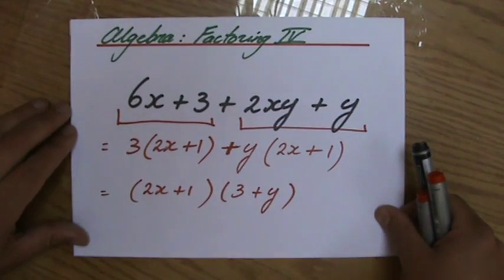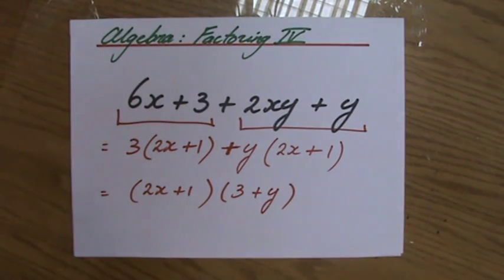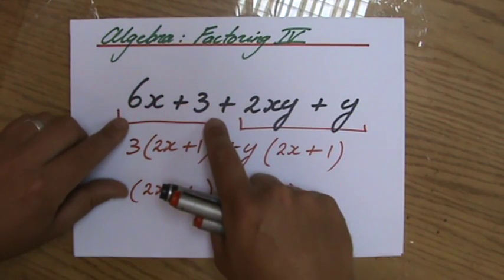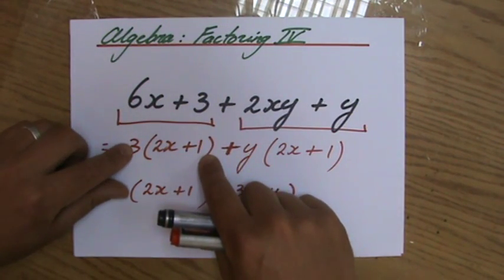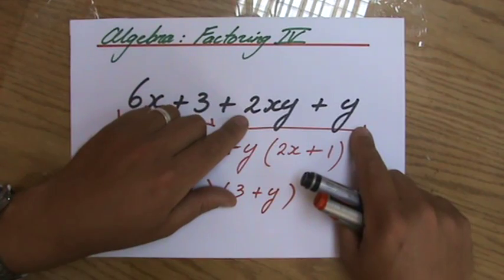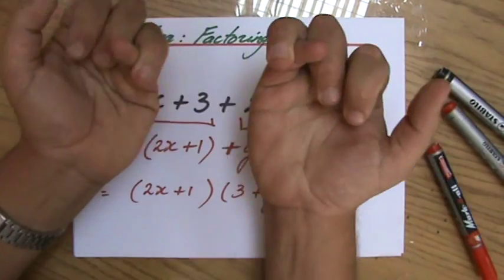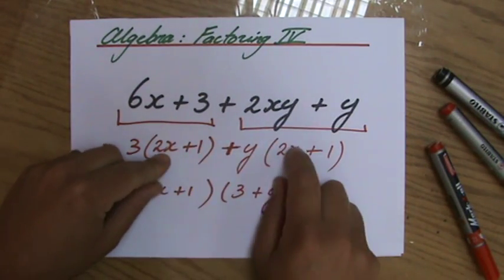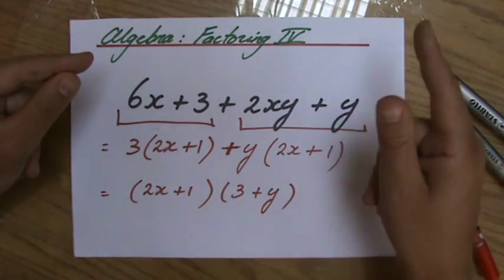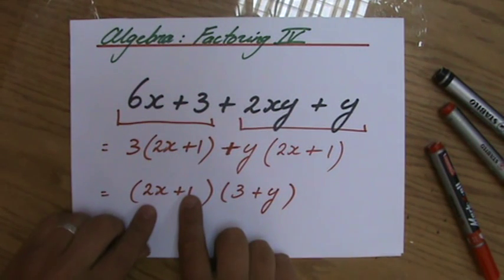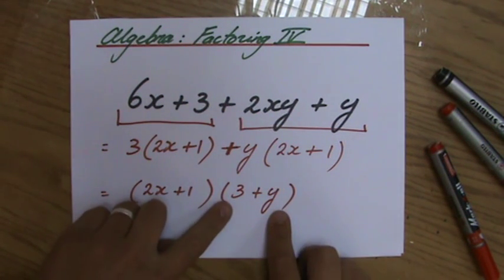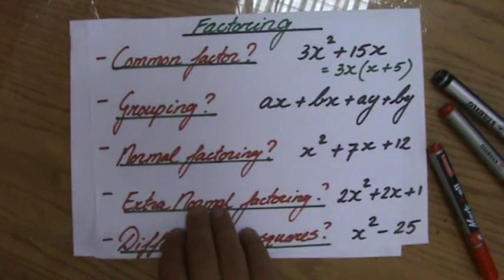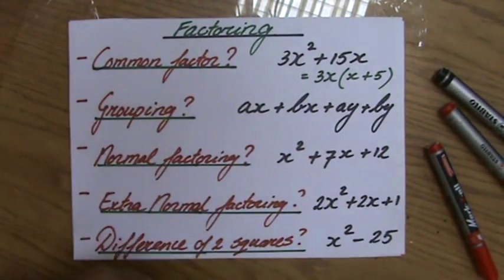So grouping, you look, you get four terms, you look at the first two, get rid of the highest common factor. You look at the second two, get rid of the highest common factor. And then you are squeezing your fingers and you're hoping it should be the same now what is inside my bracket. And it always is. Grouping. Fantastic. So 2x plus 1 times 3 plus y. That's a positive 3 plus y.